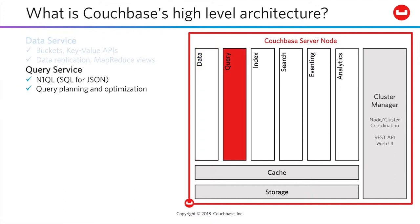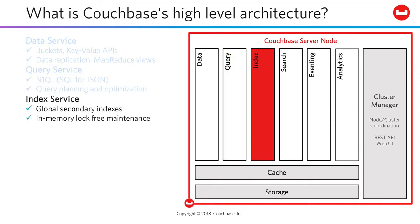The query service delivers the power of SQL for JSON, which we call N1QL. This service plans all queries and helps optimize their performance. The index service maintains global secondary indexes for the system with in-memory lock-free maintenance.